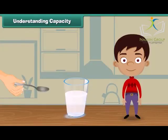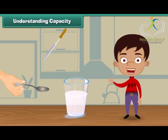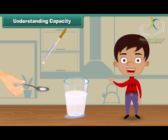This is a spoon. I will now fill this spoon with milk. Let us see how many drops of milk are required to fill the spoon. Here goes the first drop, and this is the second drop of milk in the spoon. The spoon is still empty. Let us put one more drop in the spoon. And now the fourth drop. Now the spoon is full.